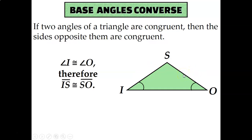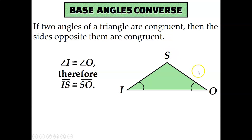The base angles converse says the same thing but in reverse, because that's what converses do — you switch around the hypothesis and conclusion. If two angles of a triangle are congruent, then the sides opposite them are congruent. So if angle I is congruent to angle O, then side IS must be congruent to side SO.